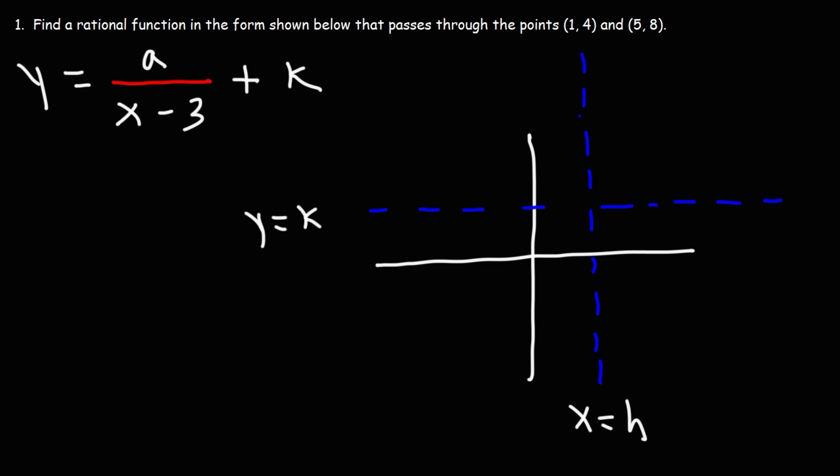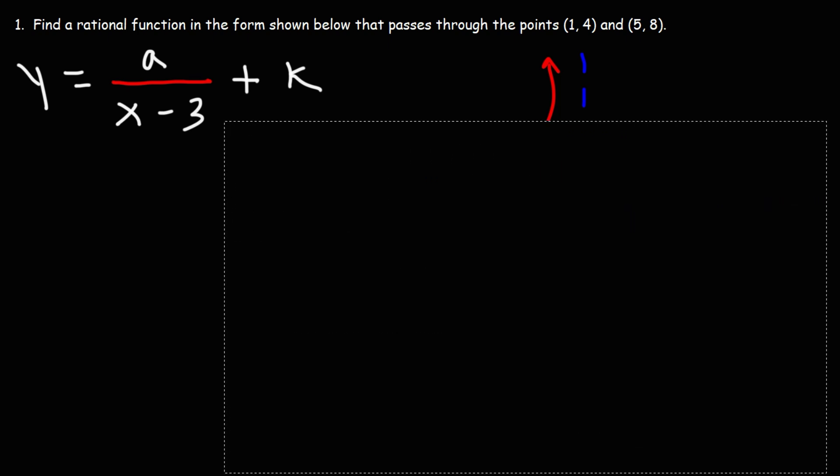And we'll have a horizontal asymptote at y equals k. Let's extend this. And if a is positive the graph is going to look like this, or something to that effect. If a is negative it's going to reflect and it's going to look like this. So those are some general properties of reciprocal functions which is a type of rational function.